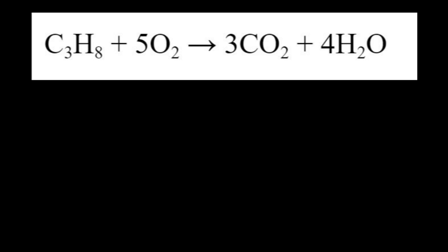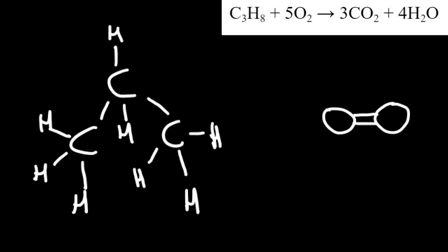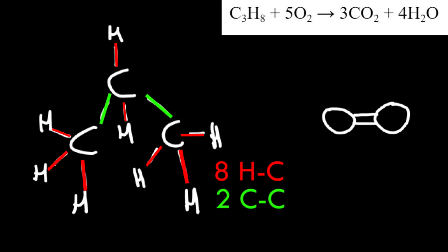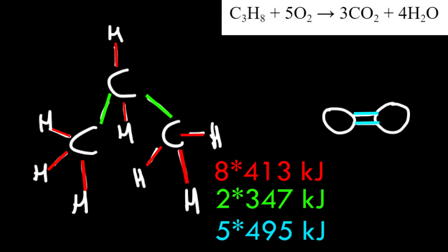We need to find the heat energy produced from a single mole of propane burning. We can find this by determining the bond energies of the reactants, adding the heat required to start the reaction, then subtracting the bond energies of the products. From the diagram, propane has eight hydrogen-to-carbon bonds and two carbon-to-carbon bonds. O₂ has a single double oxygen-to-oxygen bond. Multiplying by the moles in the reaction, we plug in bond energies: 413 kJ for C–H bonds, 347 kJ for C–C bonds, and 495 kJ for the oxygen double bond.